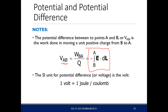The SI unit of potential difference — another name for that is voltage, which you are all familiar with — is the volt. One volt is one joule per coulomb.